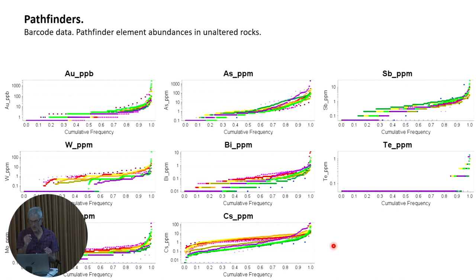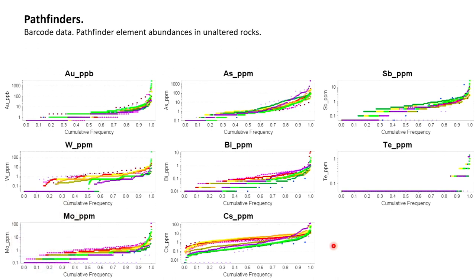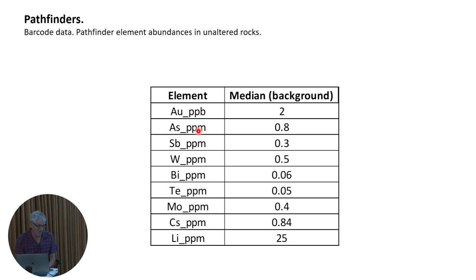Now onto the good stuff — that's all the propeller-head gear done. One of the cool things you can get out of the barcode data is I can filter for rocks that are hydrothermally altered by setting a threshold for sulfur and water content. Then I'll see how abundant the pathfinder elements are in those unaltered rocks. These are cumulative frequency plots split by compositional groups for different pathfinders. This is the far-field background — the abundance of pathfinder elements you would see in the Yilgarn in unaltered rocks. If you're trying to work out how anomalous your data is in arsenic, antimony, or tellurium, here's a reference table. That's pretty useful.